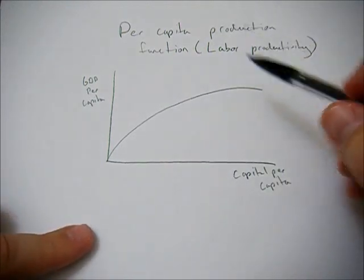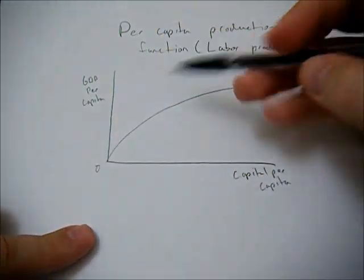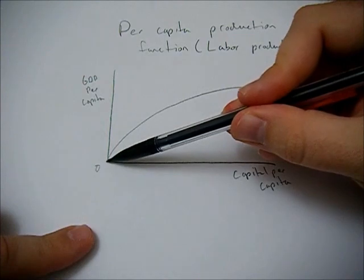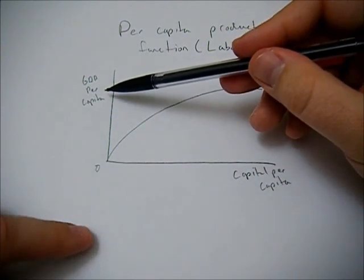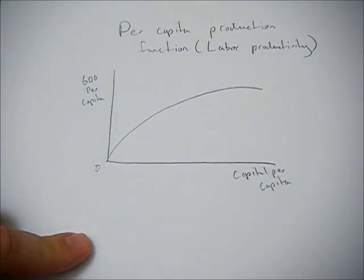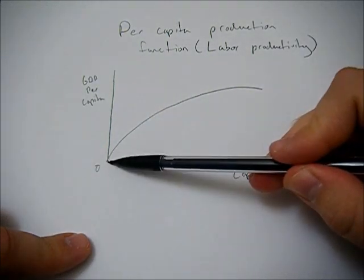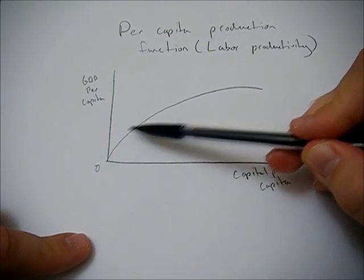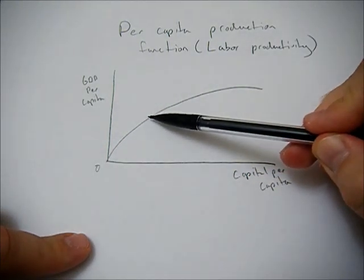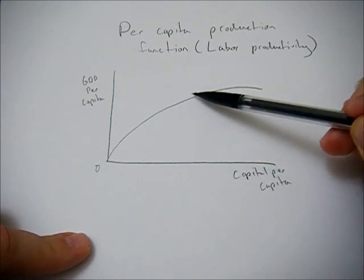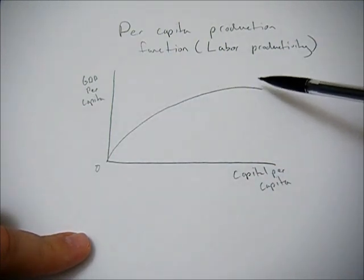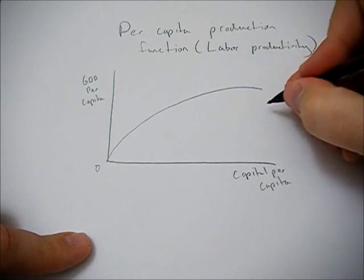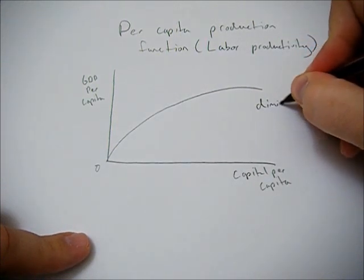As you can see, when capital per capita is zero, you can't produce much. It's hard to create things without tools. But as you start introducing capital to the economy, you see great gains in the beginning. But as you keep putting more and more capital into the economy, you see these diminishing returns to capital.